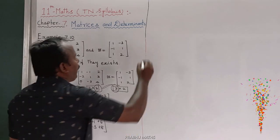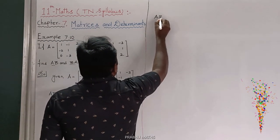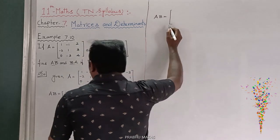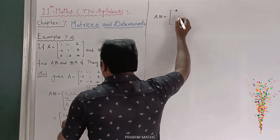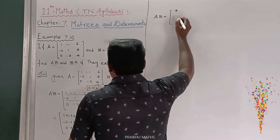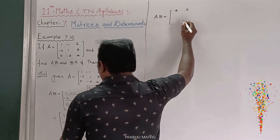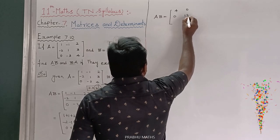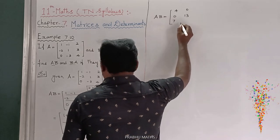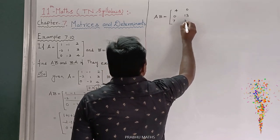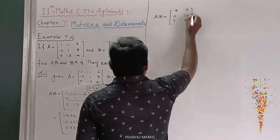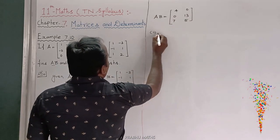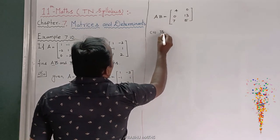Now A times B is equal to: the answer is first entry 4, second entry 0; third entry 0, fourth entry 13; fifth entry 7, sixth entry plus 5.